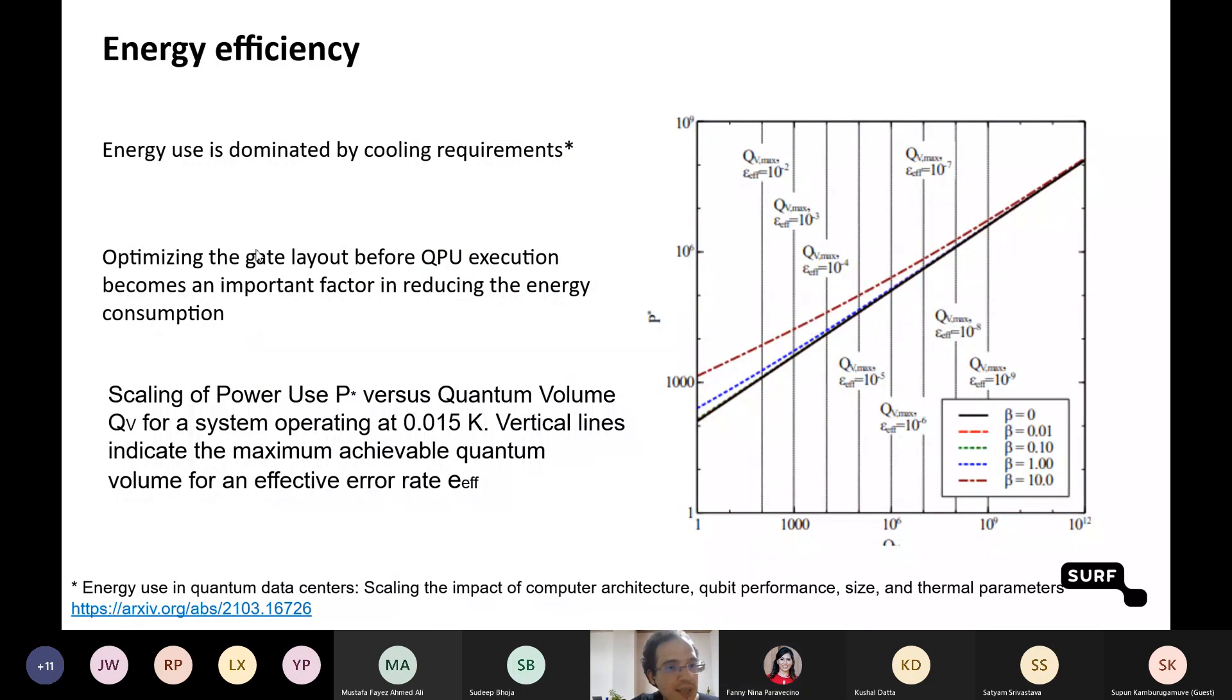We already know that cooling requirements for quantum computers are the biggest consumer of energy. I linked original work from Martin et al. showing that cooling efficiency and cryostat heat transfer are the main components that can be improved to reduce energy consumption.